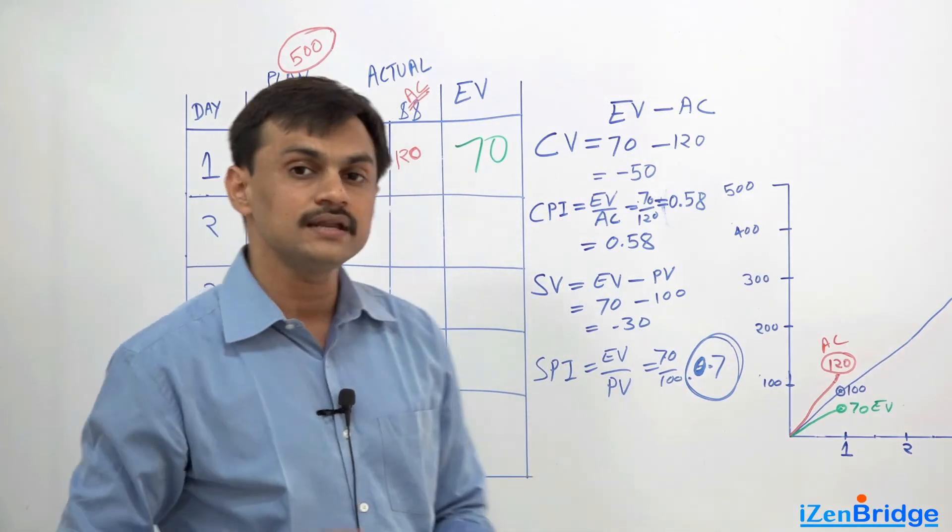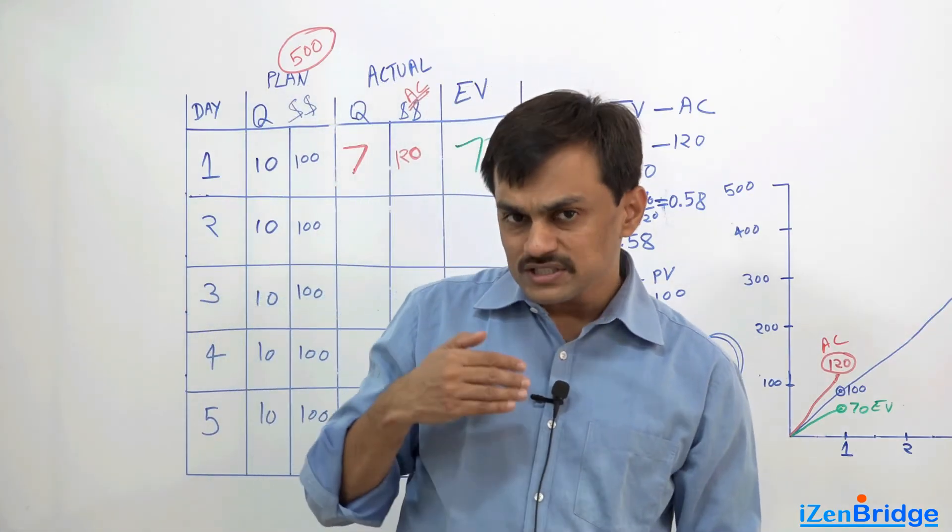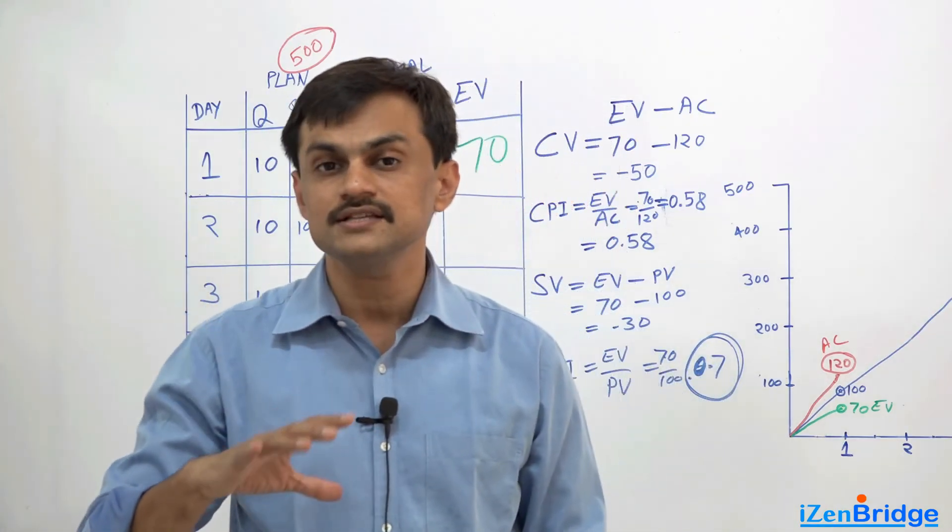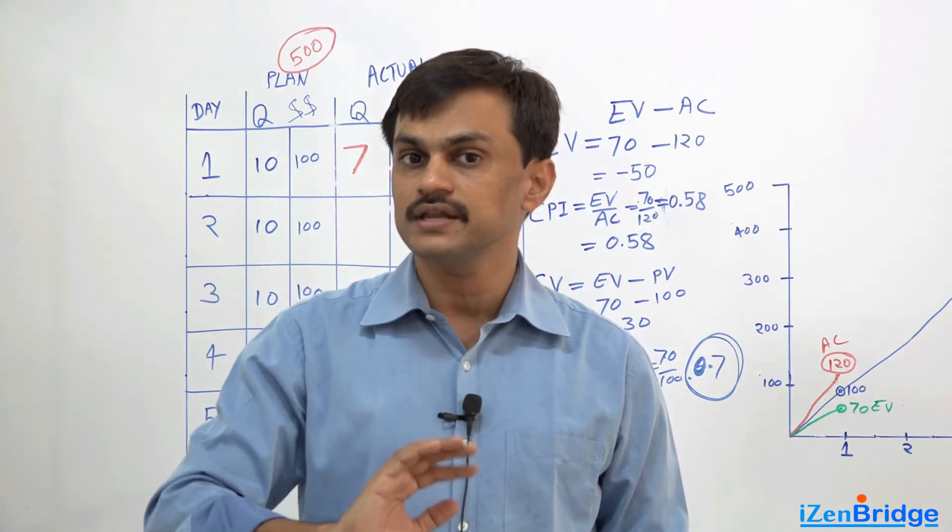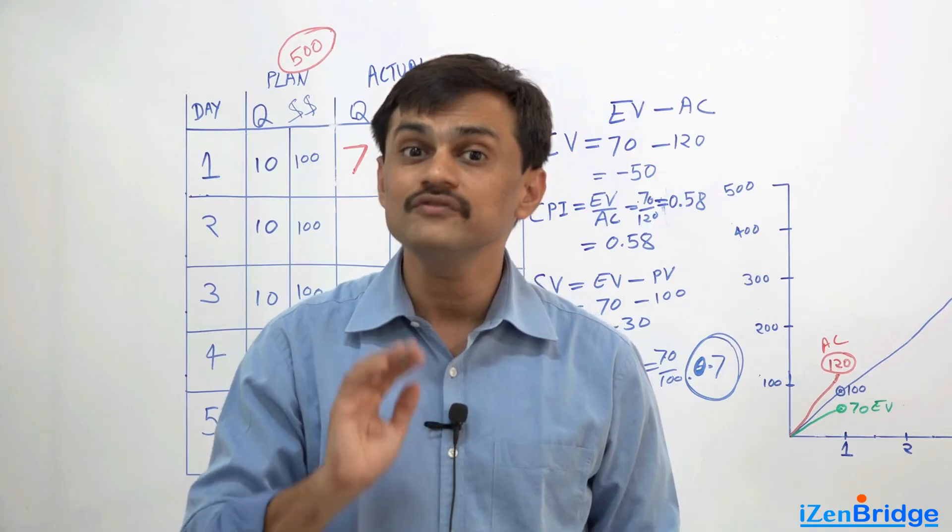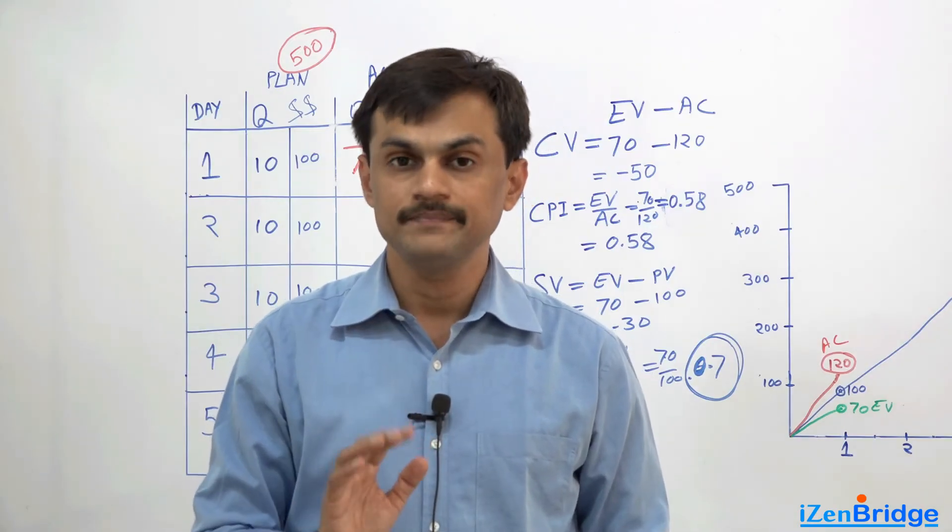So we use schedule performance index to identify, as a percentage wise, how much percentage we are completing our work against the plan, and we use cost performance index and cost variances to figure out how well we are making use of our money.